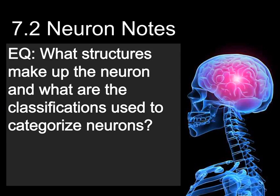This is 7.2 Neuron Notes. The essential question is: what structures make up the neuron, and what are the classifications used to categorize neurons?